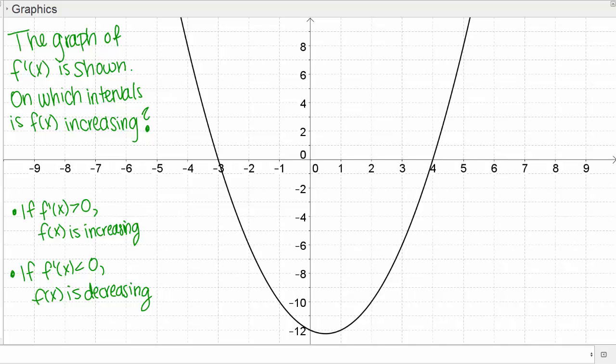Let's note on our graph here where the derivative is positive and negative. This is the graph of the derivative. It's positive up here, above the x axis. We've got positive y values. Once we hit x equals negative 3 here, we switch to negative y values. Then once we get back to x equals 4, we're back to positive y values.